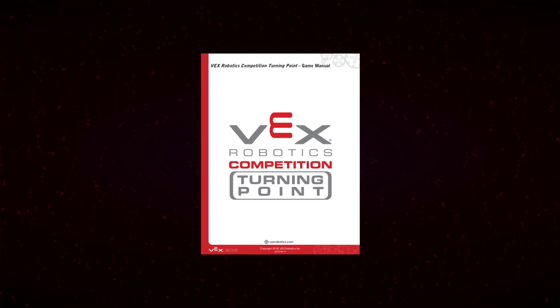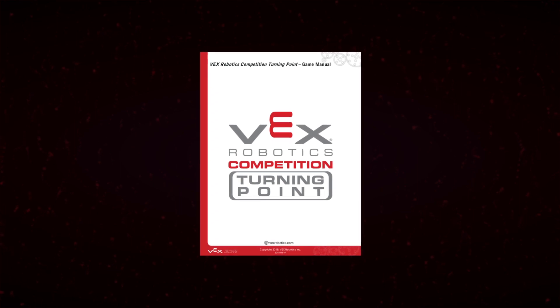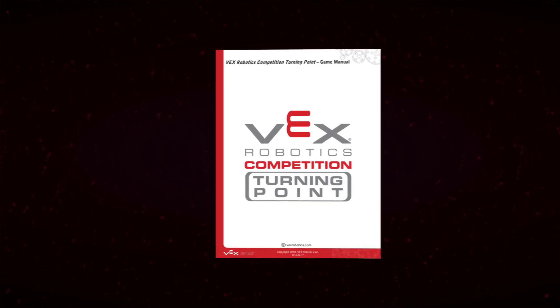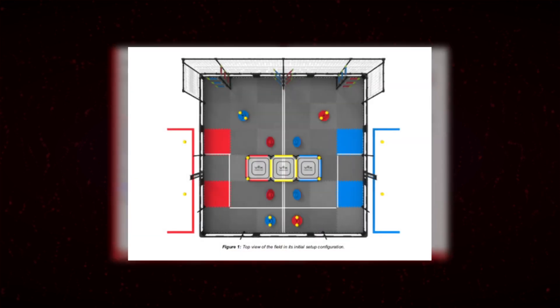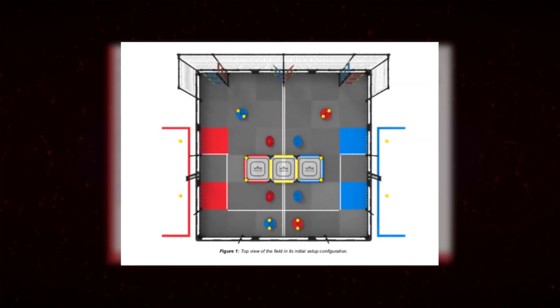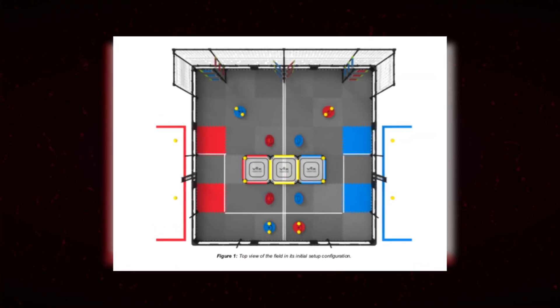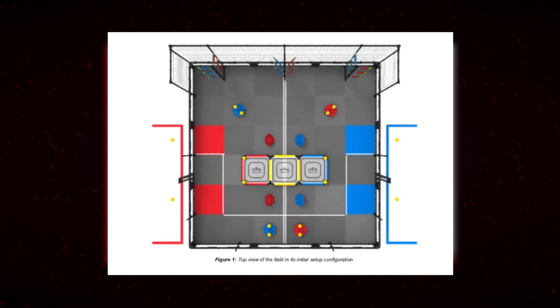VRC turning point must be set up in a very specific orientation. This layout can be found in the manual and is shown here. To prepare a turning point match, referees must verify the on-field placement of caps, balls, and flags.